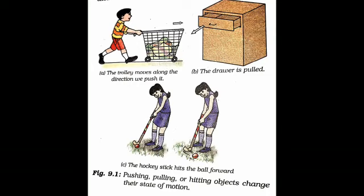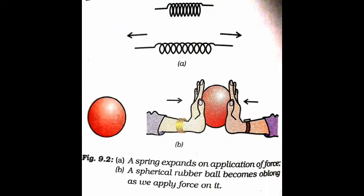Now, observe figure 9.2 given here from your studies in earlier classes. You are also familiar with the fact that a force can be used to change the magnitude of velocity of an object, that is what I mean to say, to make the object move faster or slower or to change its direction of motion. We also know that a force can change the shape and size of the object as it is shown here.